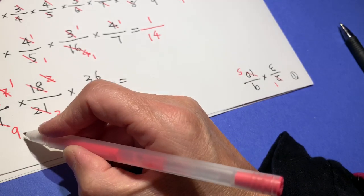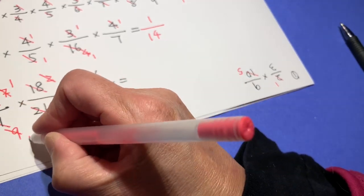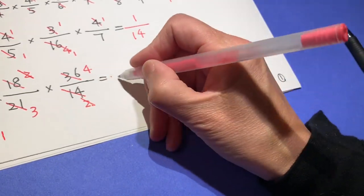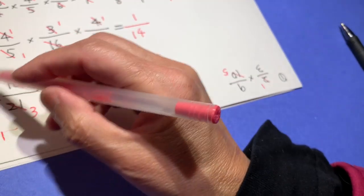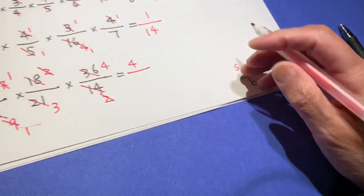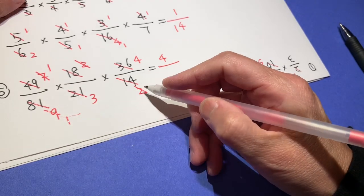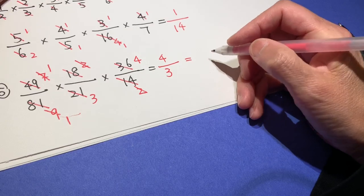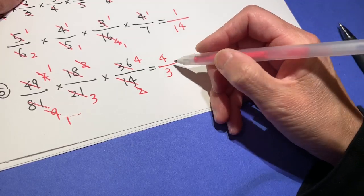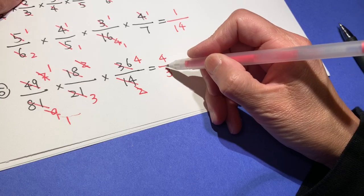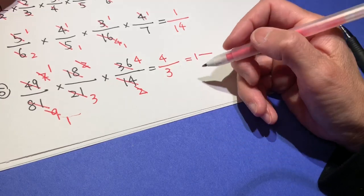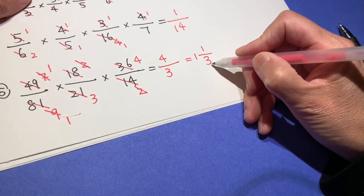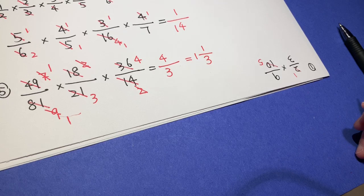36 and 9, both can be divided by 9: 1, 4. So the last one standing on top is 4. And the last one standing on the bottom is 3. And we change into mixed number. 3 goes into 4? 1, remainder 1. And the bottom never, ever changes the number. And that is it.